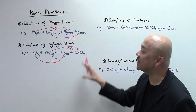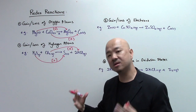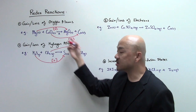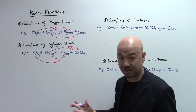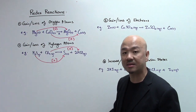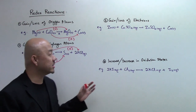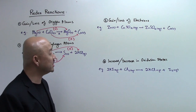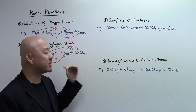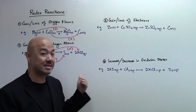These two methods are quite easy, but they are not the best because not every chemical reaction involves the gain or loss of oxygen and hydrogen atoms. So in a lot of cases, you cannot use these two methods. We're going to take a look at methods 3 and 4, which are more universal — you can use these two methods to determine whether a chemical reaction is a redox reaction or not in almost all instances.